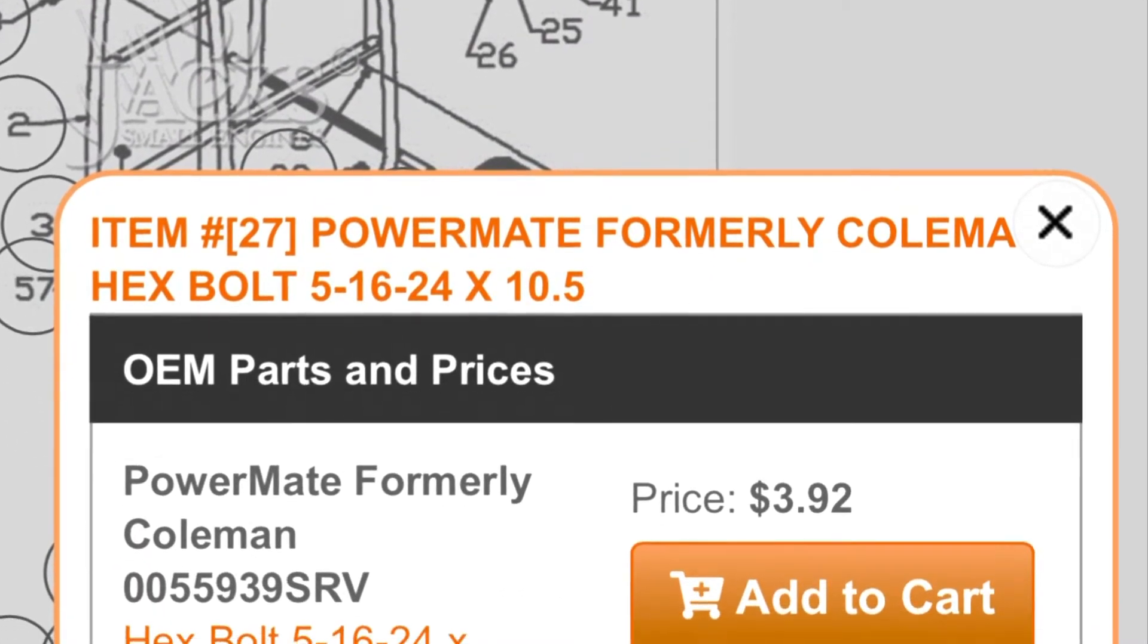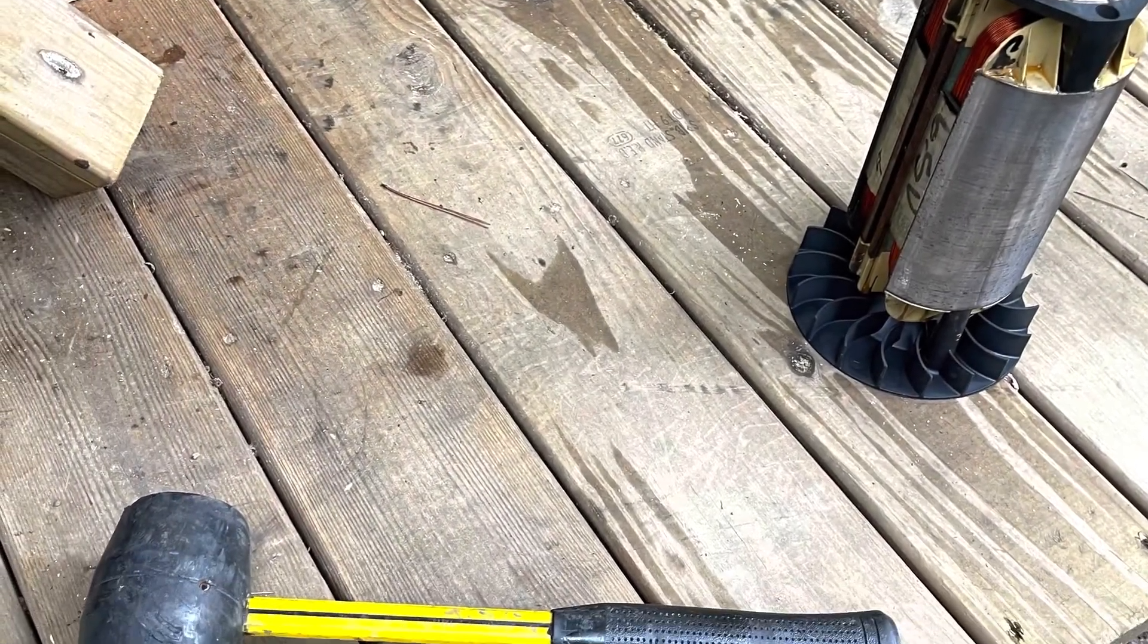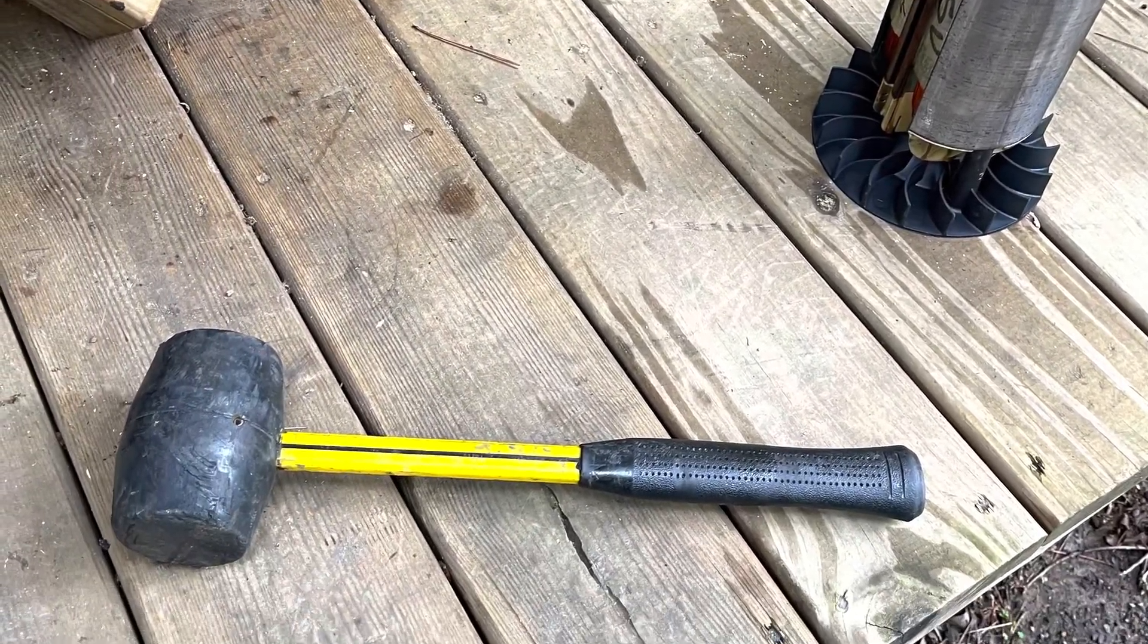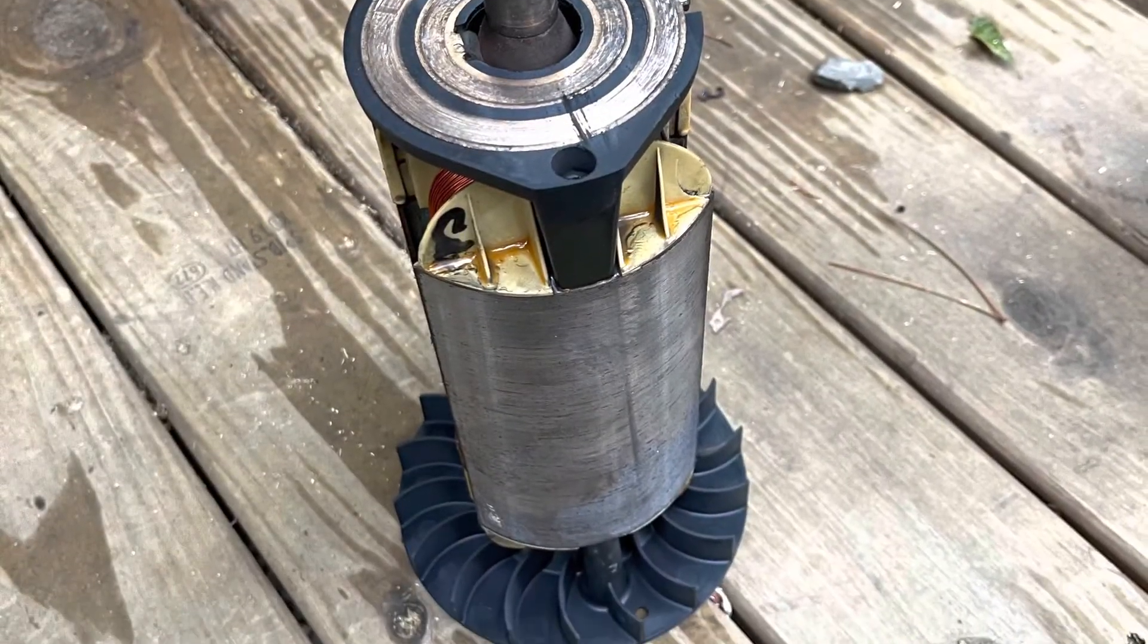Was brute force, using a heavy rubber mallet and giving it a couple healthy whacks to the metal portion of the armature, and that did free it from the end of the crankshaft. Not what I wanted to do, but it was the only way that we could get that thing off.